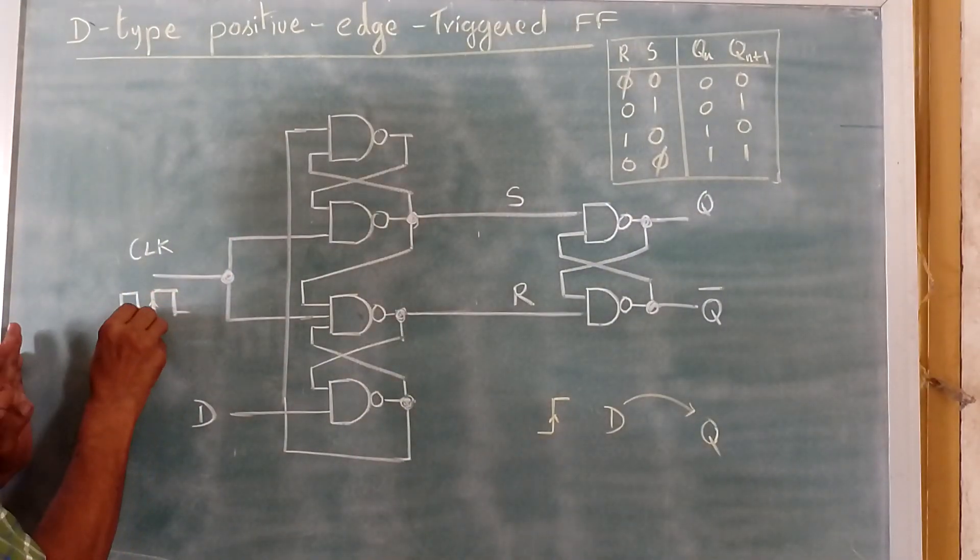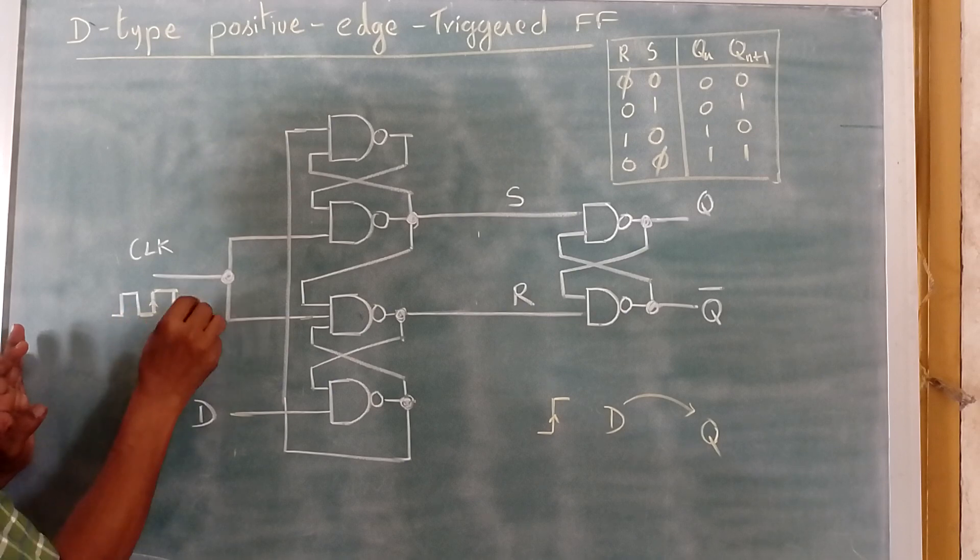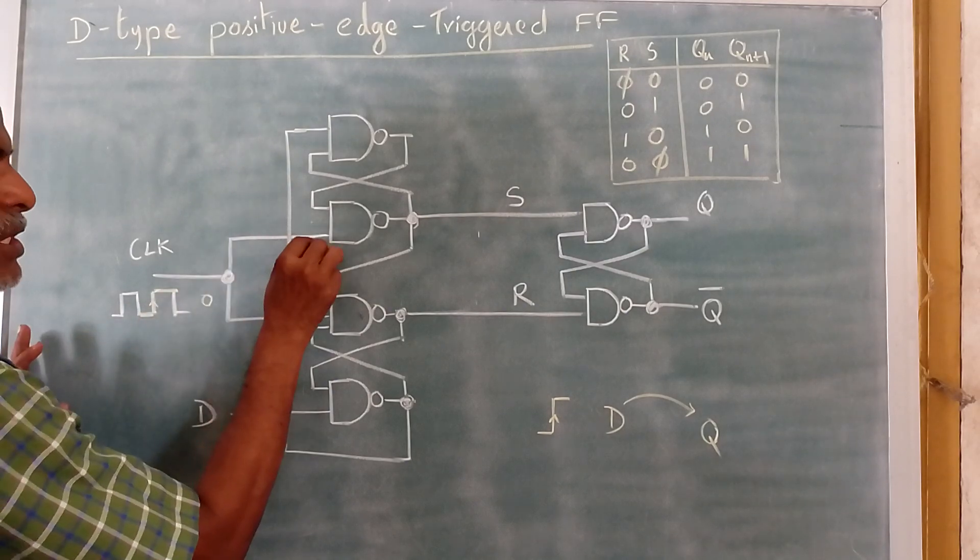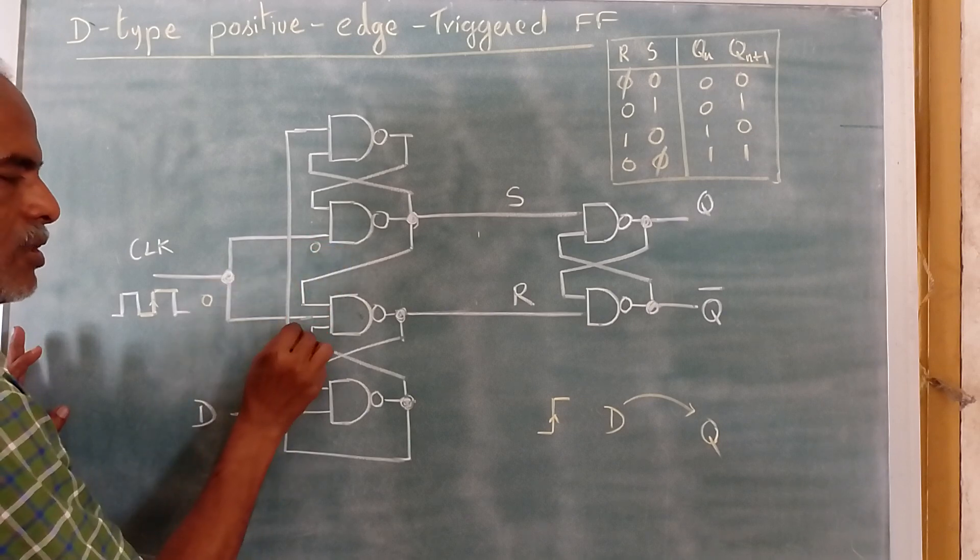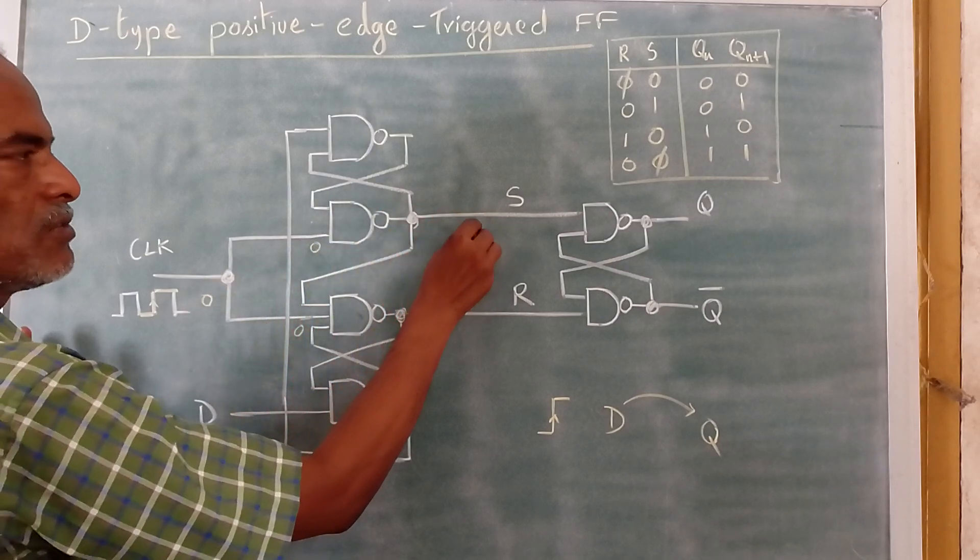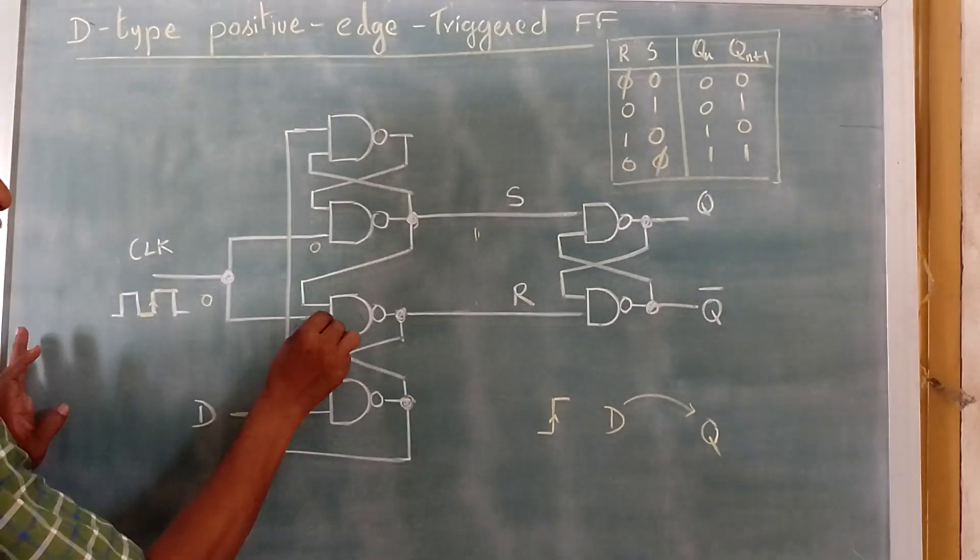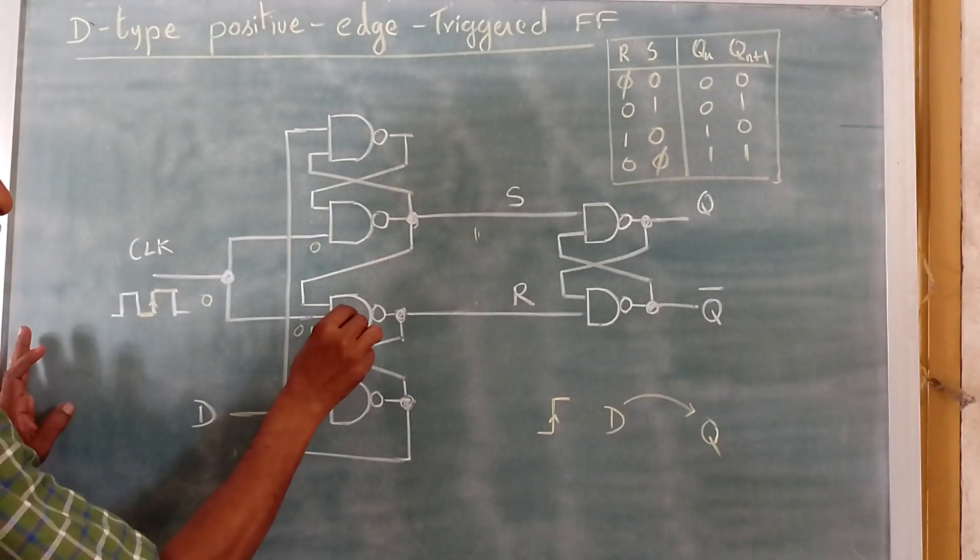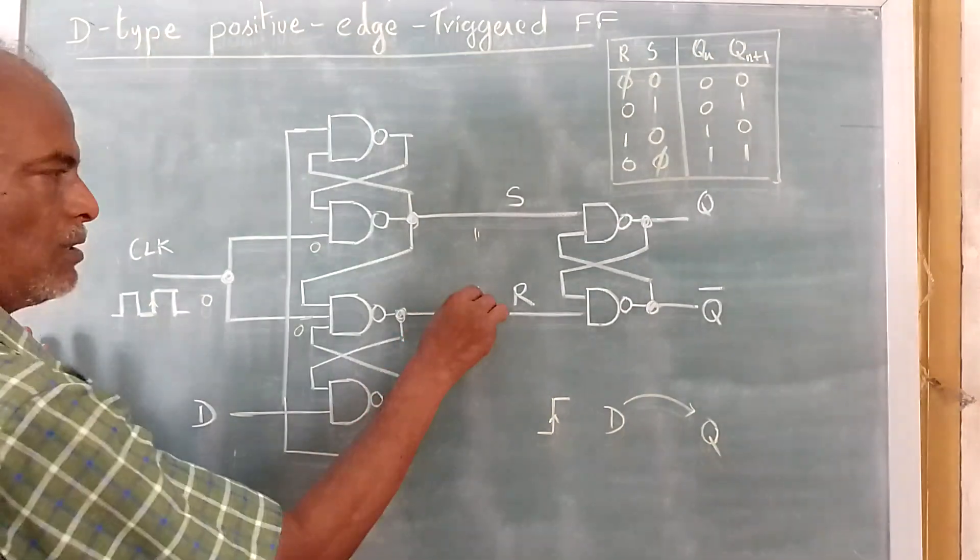Now first we will assume it is in 0, so this point is 0. If this is 0, this is 0, this is also 0, 0 this end is 0. 0 on inversion this will become 1. Here it is 0, so therefore here 0, 0 on inversion, 1.